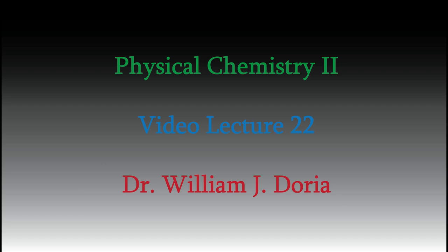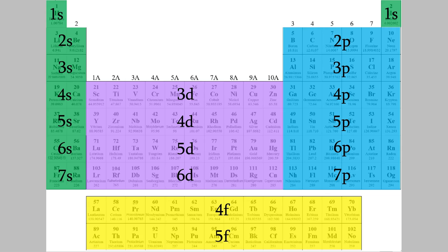Hi, and welcome again to my series of videos for Physical Chemistry 2. When we last talked, you learned all about the periodic table and the reason it has its odd shape. In the next few videos, I'll tell you about how we can use the periodic table to predict some of the properties of atoms and ions. It's part of what makes the periodic table such a useful tool for chemists.